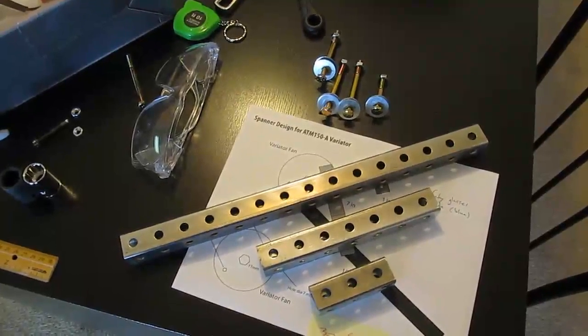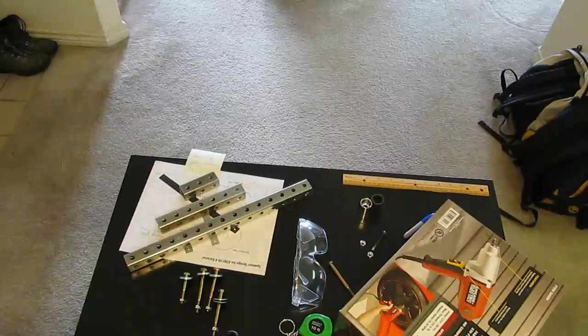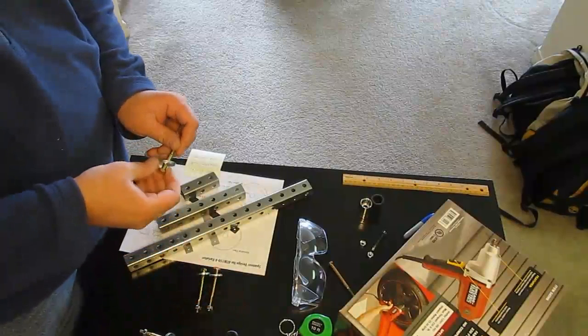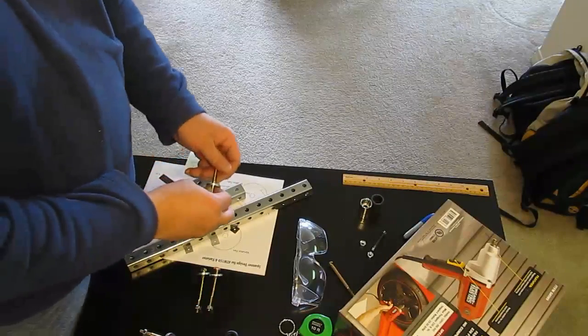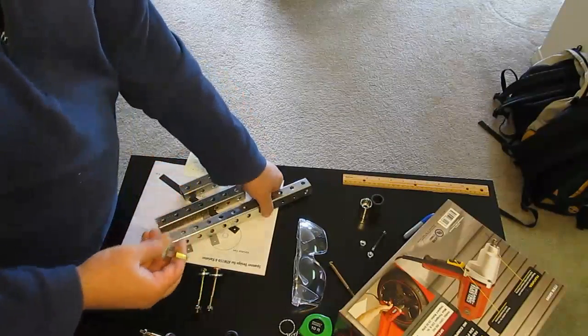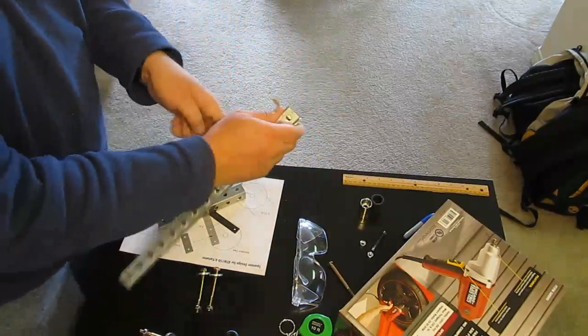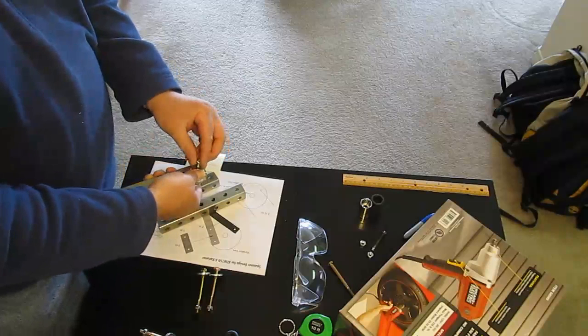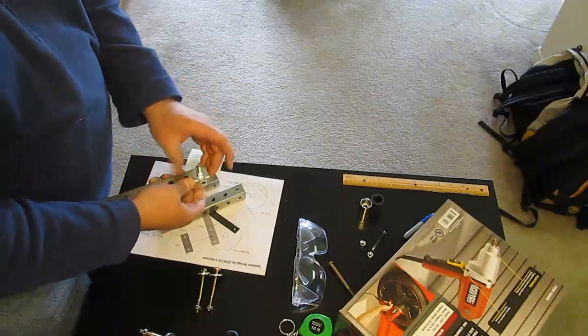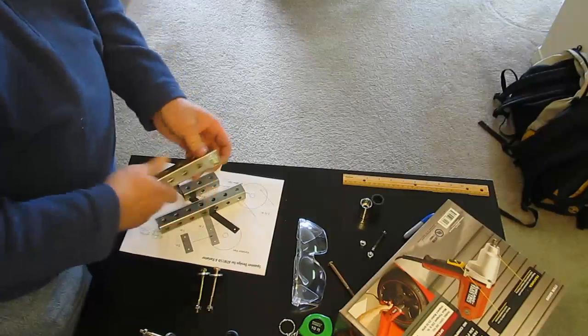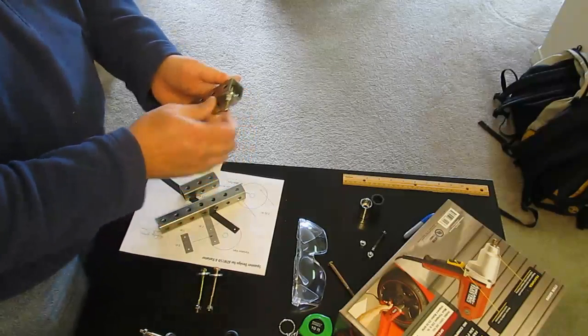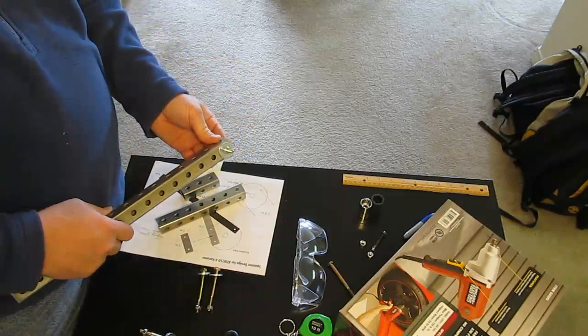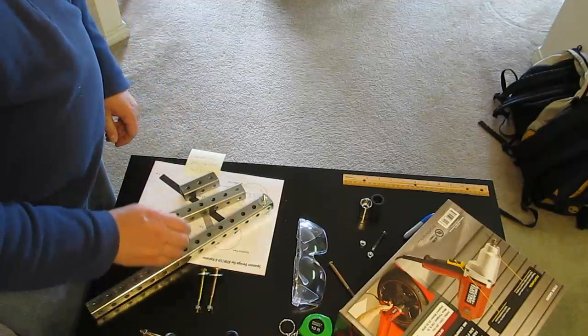Now it's time to assemble. The 2 inch bolt will be inserted into one of the holes in the variator fan.